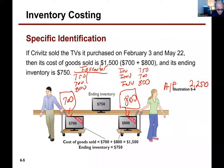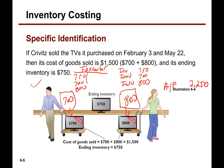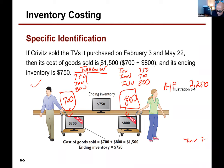Now, what happens when a customer purchases this item? The entity would have to credit inventory. If he purchases on account, he would have to credit inventory for $750 and debit accounts receivable. Actually, let me clarify — they sell it for $900, but it costs the entity $700.